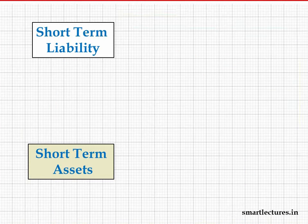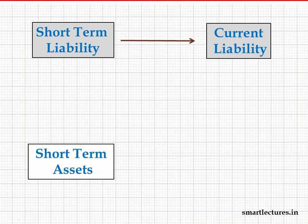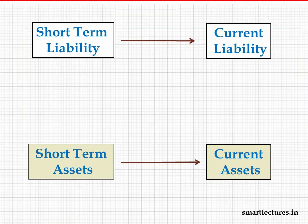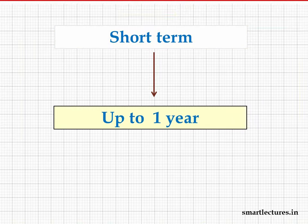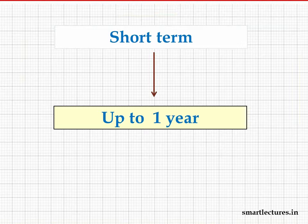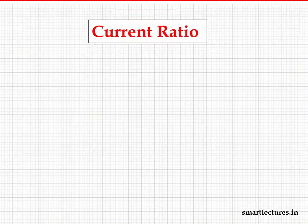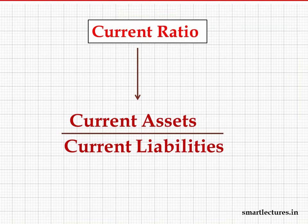Short-term assets are called current assets, and short-term liabilities are called current liabilities. In accountancy, short-term means only up to one year. The formula of the current ratio is current assets upon current liabilities. This current ratio tells about the short-term solvency of the firm.